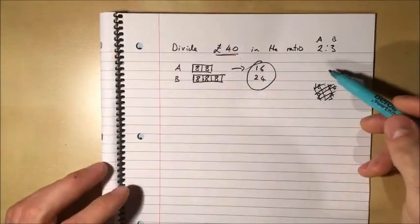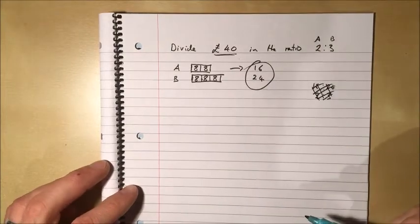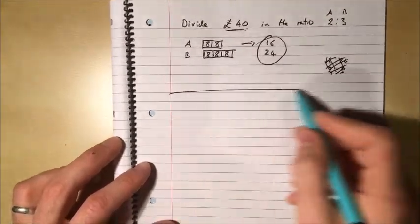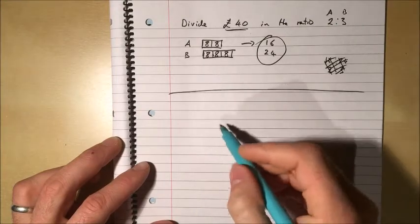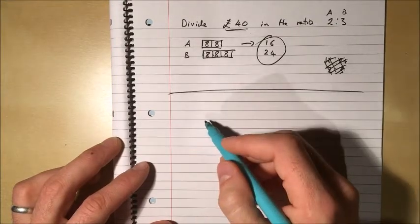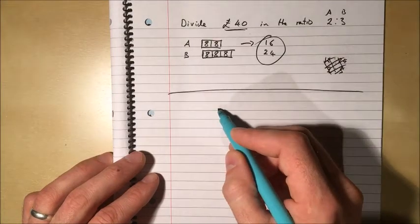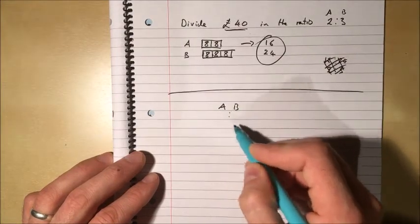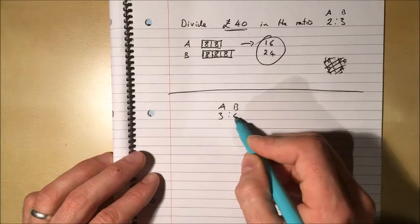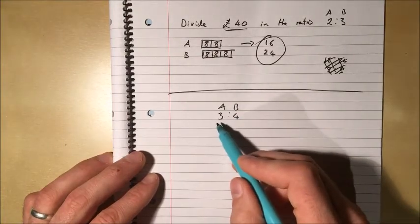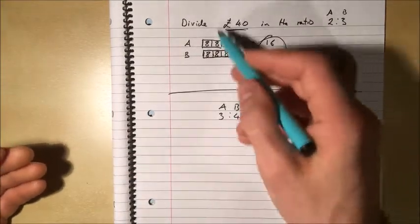Now I should say these questions sometimes come disguised. So for example, I've seen a question where it says we have an amount of something or other, an amount of sweets and they get split between person A and person B in the ratio 3:4. What percentage does person A get? So it doesn't tell us our amount.